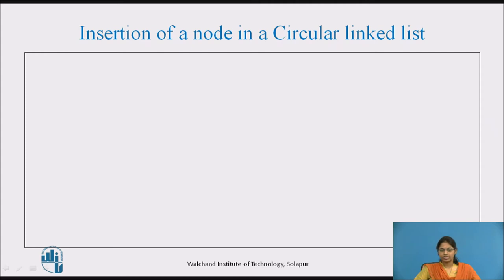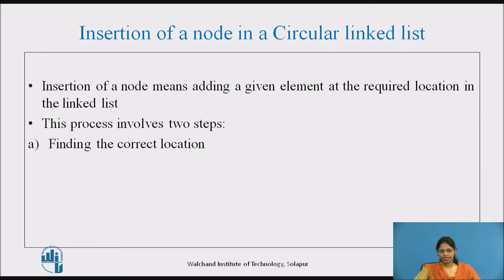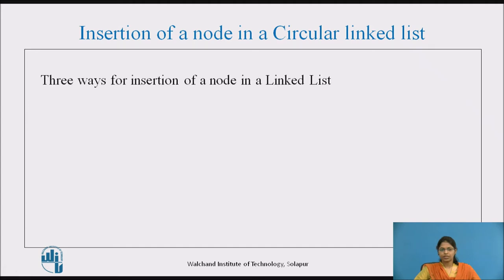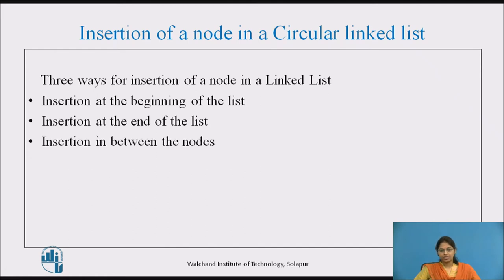Let's see the insertion of a node in a circular linked list. Insertion of a node means adding a given element at the required location in the linked list. This process involves two steps: finding the correct location and inserting the node. There are three ways for insertion: insertion at the beginning, insertion at the end, and insertion in between the nodes.